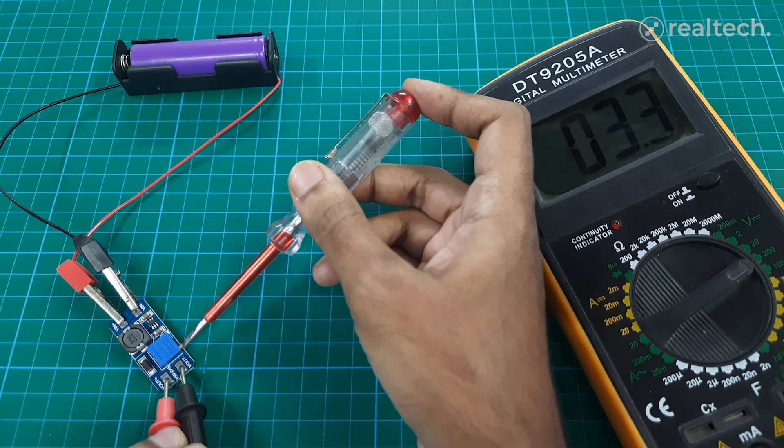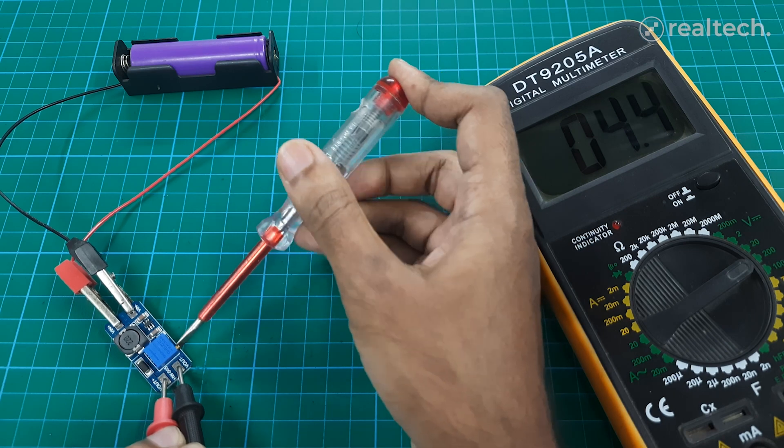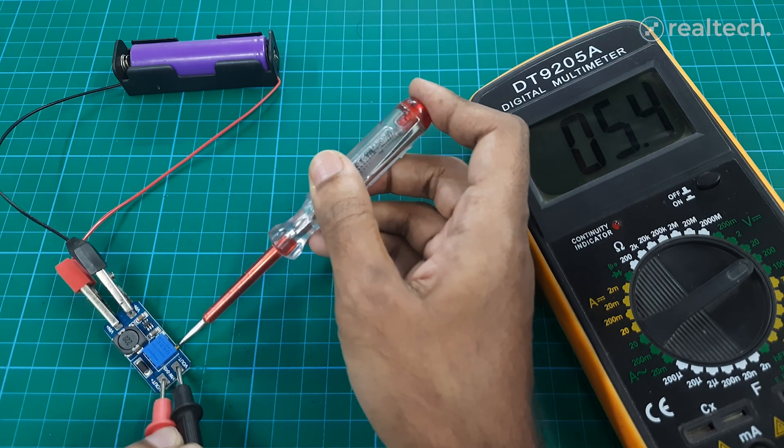It delivers up to 2 amps of output current with efficiency up to 93%, making it ideal for battery-powered projects, LED lighting, and portable electronics.